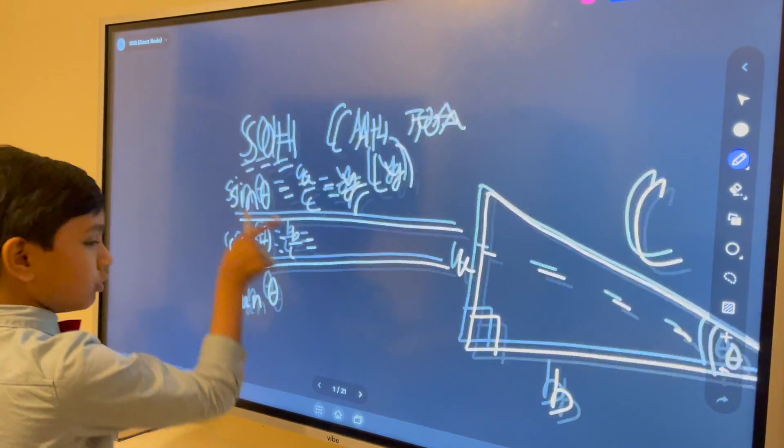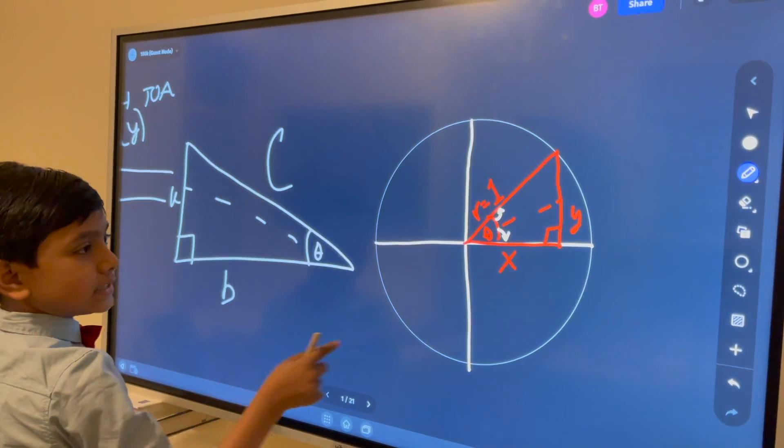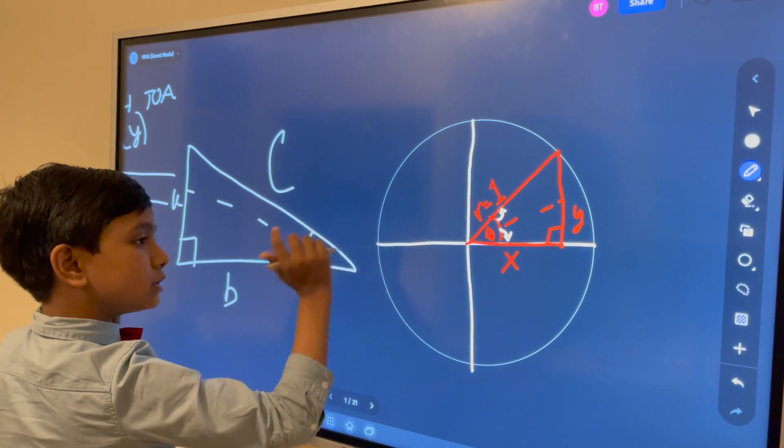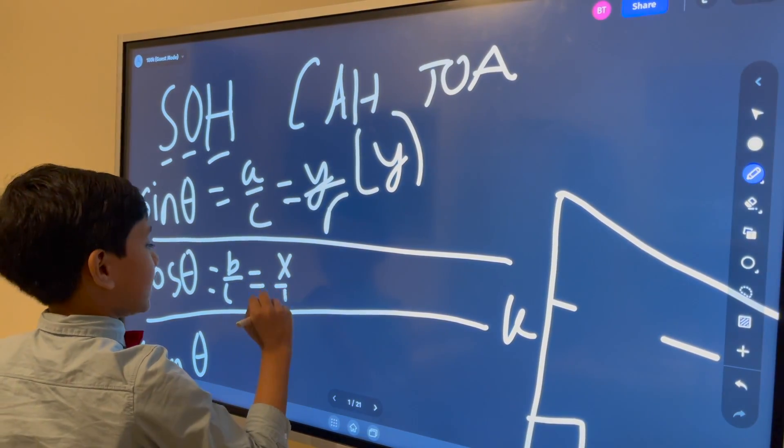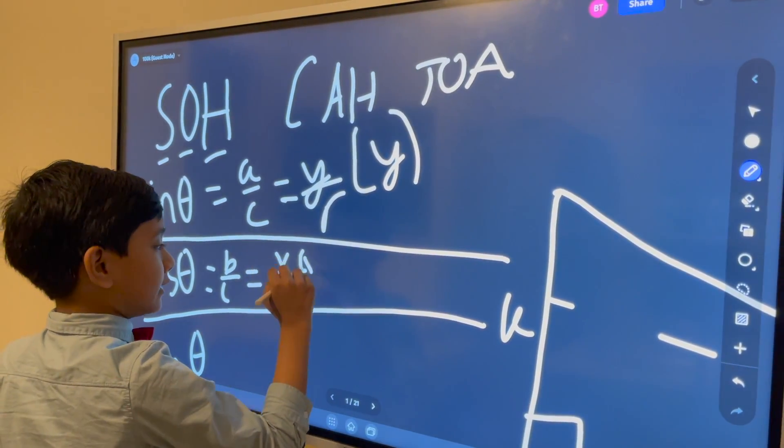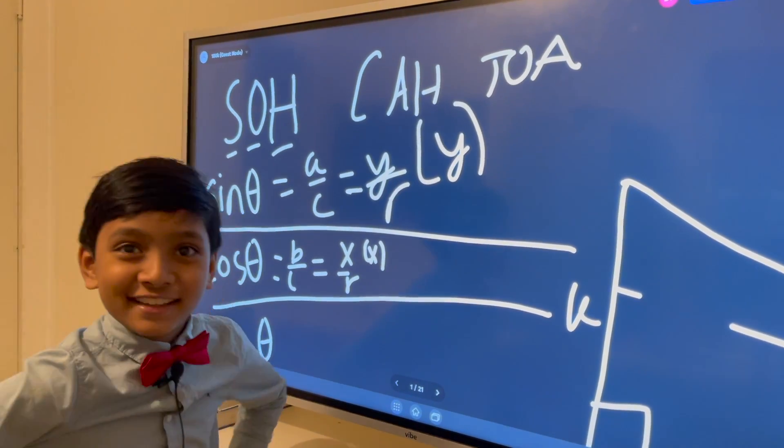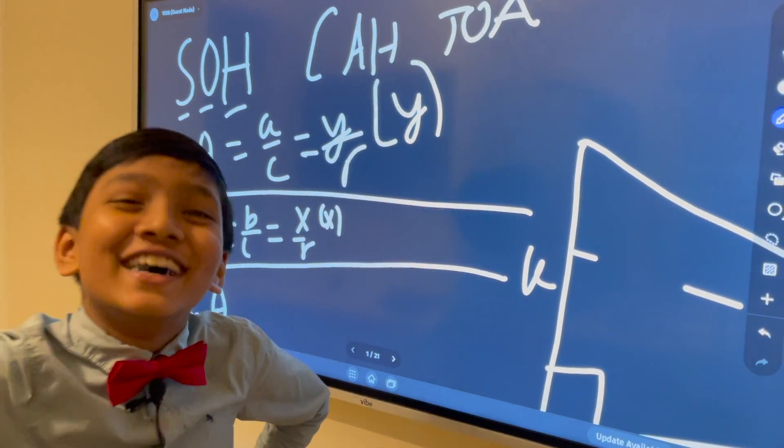This is equal to, well, let's look at this for reference. X over R. Which is also effectively just X in terms of the unit triangle. But, once again, R is way too great to be anything else.